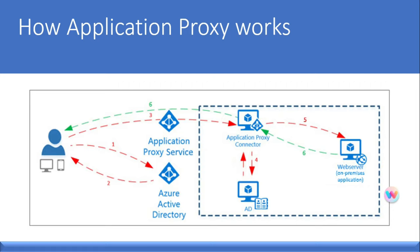Let's have a look at how exactly Application Proxy works. After the user has accessed the application through an endpoint, the user is directed to the Azure AD sign-in page. After a successful sign-in, Azure AD sends a token to the user's client device. The client sends the token to the Application Proxy service, which retrieves the UPN and SPN — the security principal name — from the token.